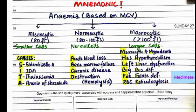Now let us look at the significance of MCV. We also see here a mnemonic. According to MCV, anemia can be classified into microcytic anemia, normocytic anemia, and macrocytic anemia. For normocytic anemia, that is normal cell size, MCV is the normal value of 80 to 100 femtolitres. Below 80 femtolitres it is called microcytic anemia — cells in this kind of anemia are smaller size. Above 100 femtolitres it is called macrocytic anemia, meaning the RBCs are larger sized.